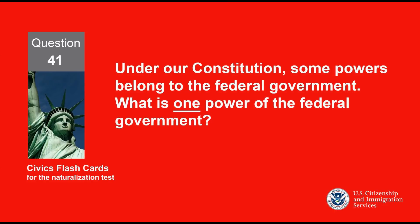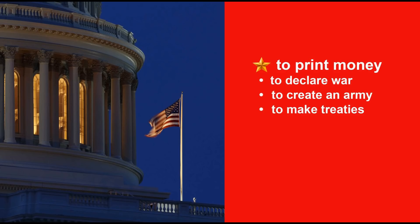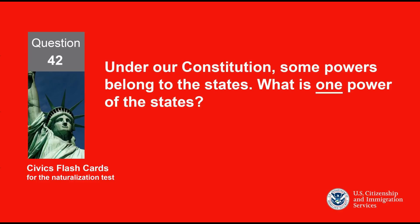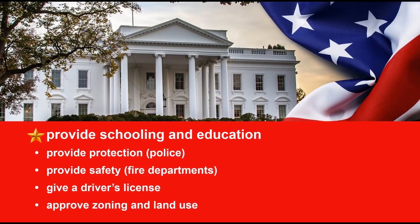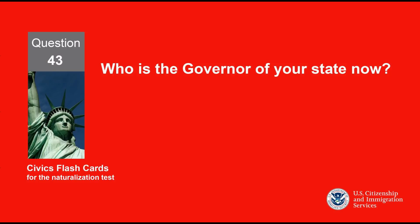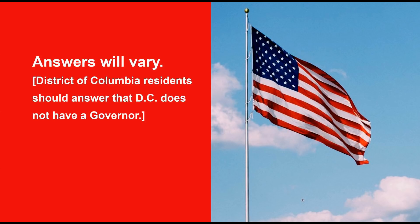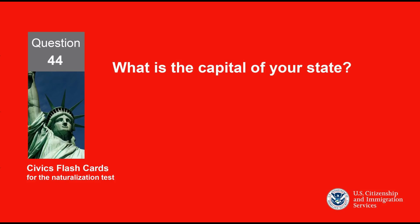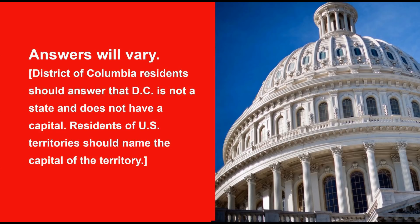Under our Constitution, some powers belong to the federal government. What is one power of the federal government? To print money. Under our Constitution, some powers belong to the states. What is one power of the states? Provide schooling and education. Who is the governor of your state now? Answers will vary. What is the capital of your state? Answers will vary.